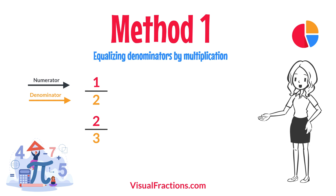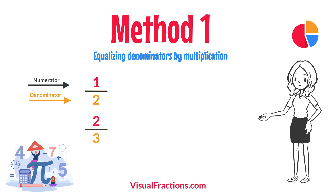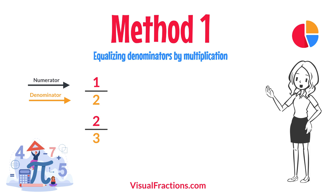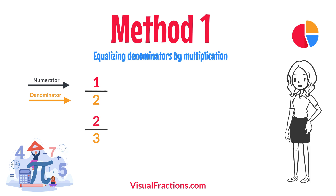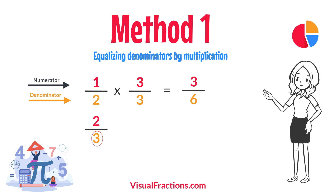First, let's equalize the denominators by multiplying each fraction's numerator and denominator by the other fraction's denominator. This method works by using the denominators of each fraction to create a common denominator, allowing us to compare the fractions directly. For one half, multiply both the numerator and the denominator by three — the denominator of two thirds. This gives us three sixths.